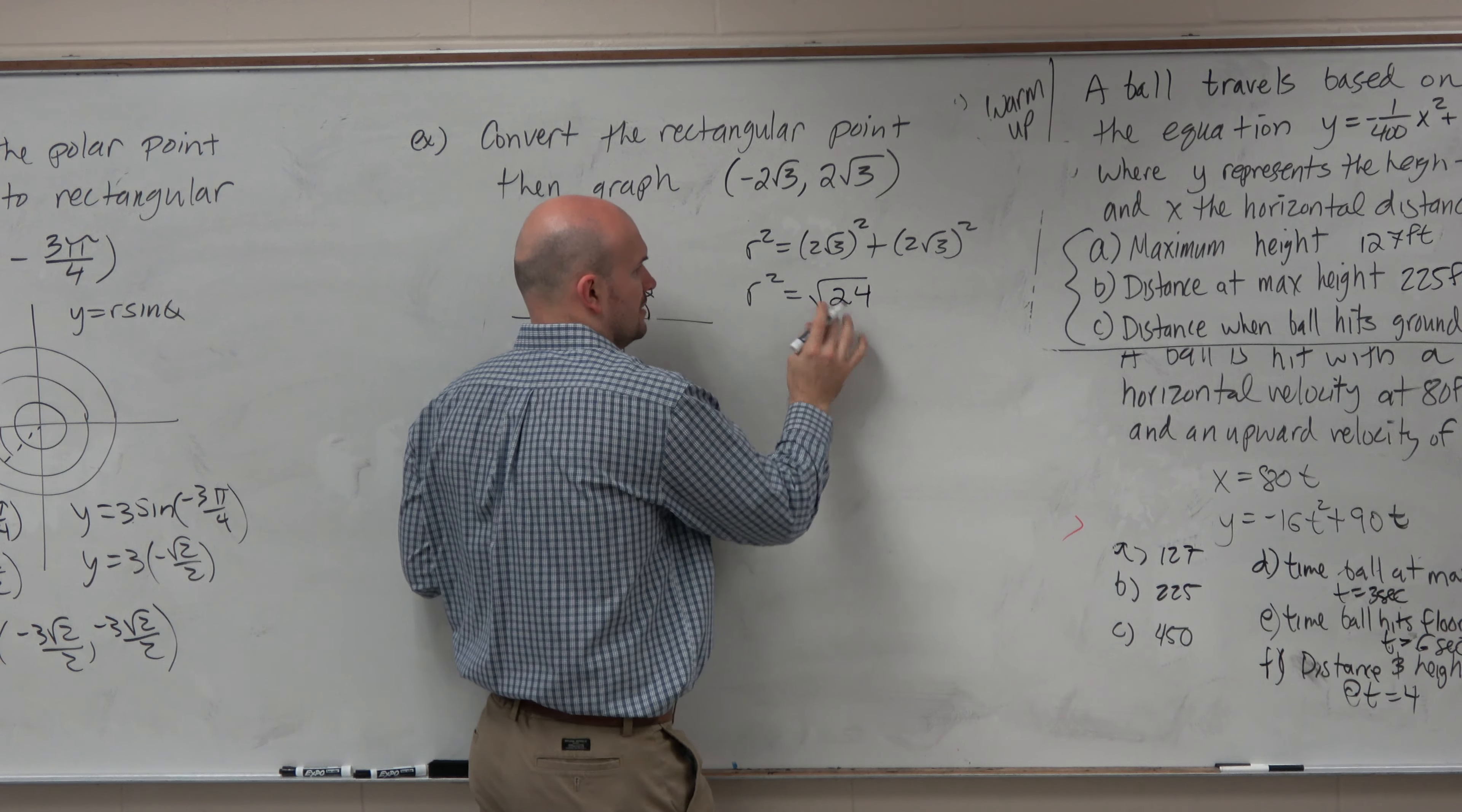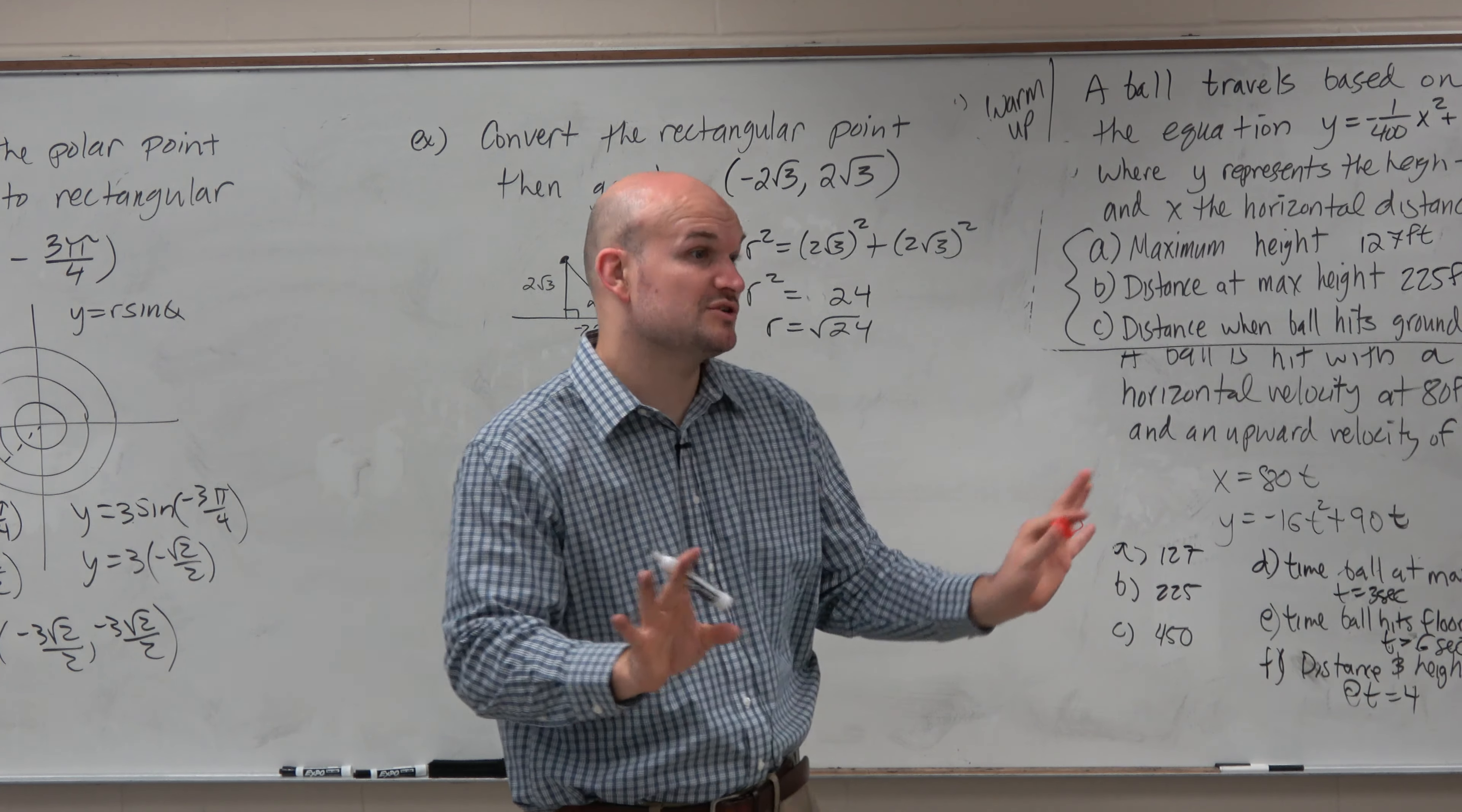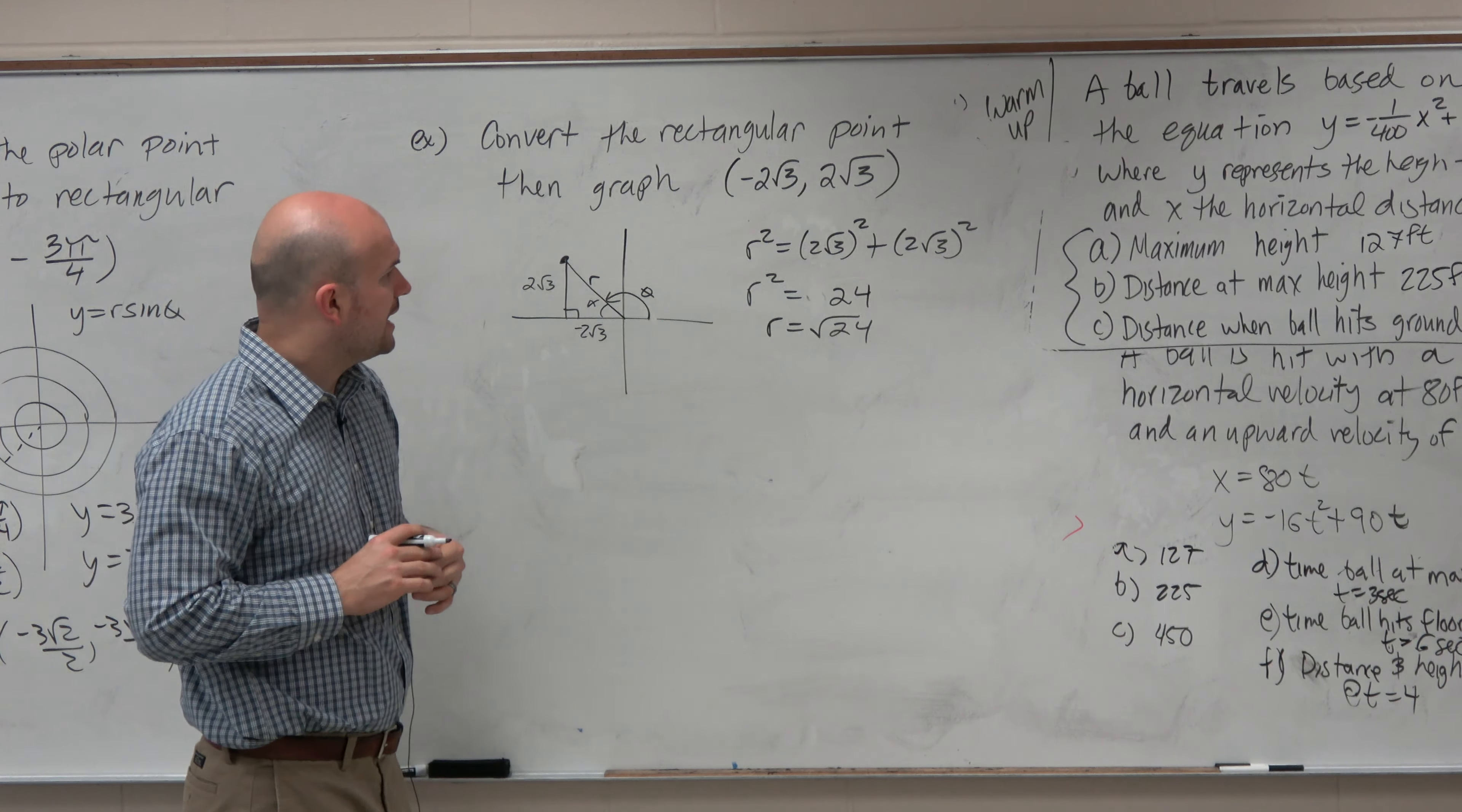I'm sorry. That's equal to 24. And then r is equal to square root of 24. Yes, which we could simplify, but we can just leave it like that because remember I said this chapter, you don't need to worry about simplifying, right? Then we could figure out the alpha because we can't figure out theta right now unless we know what alpha is.